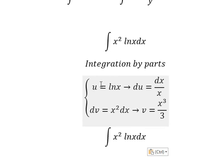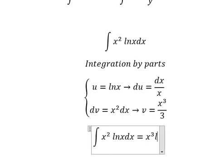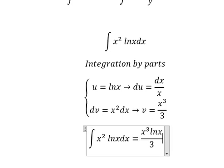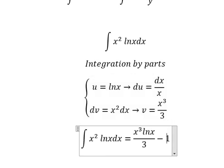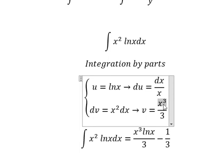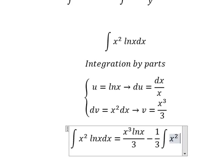So we have u multiplied by v, that's x to the power of 3 ln x over 3, minus du multiplied by v. We have 1 over 3, x to the power of 3 divided by x. So we have the integration x squared dx.